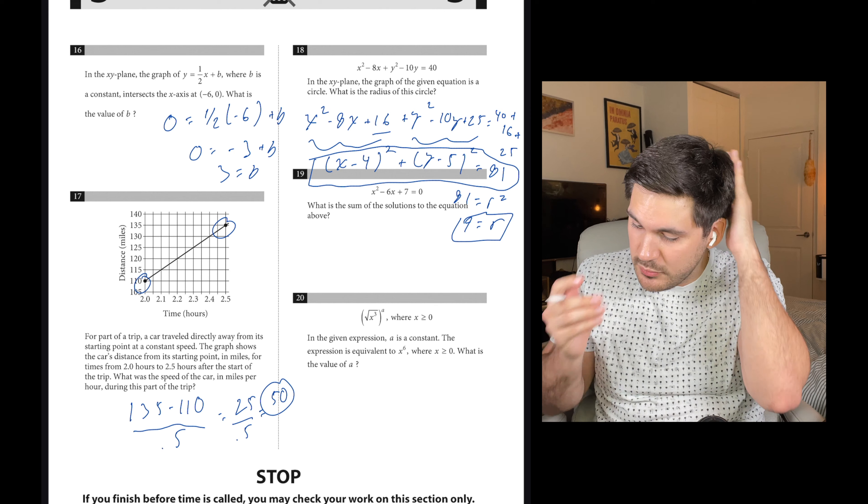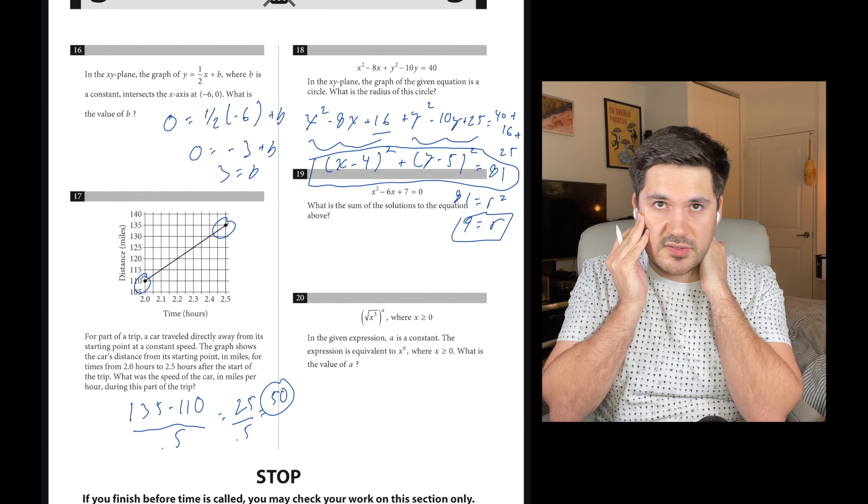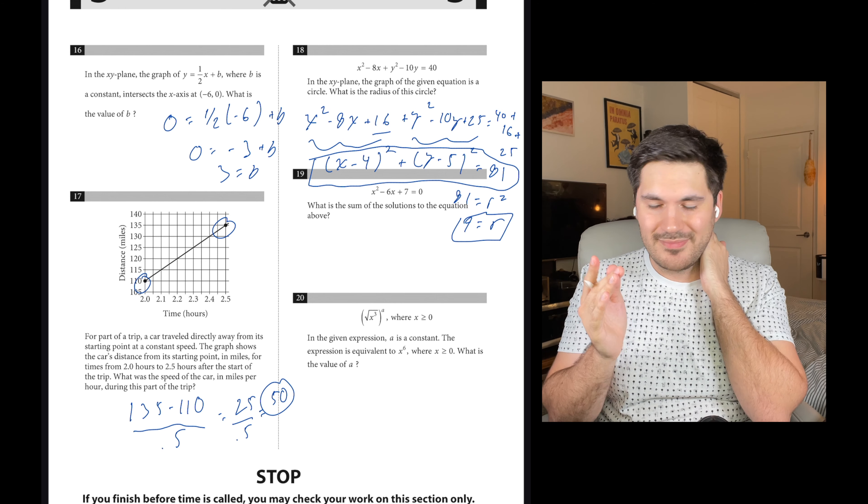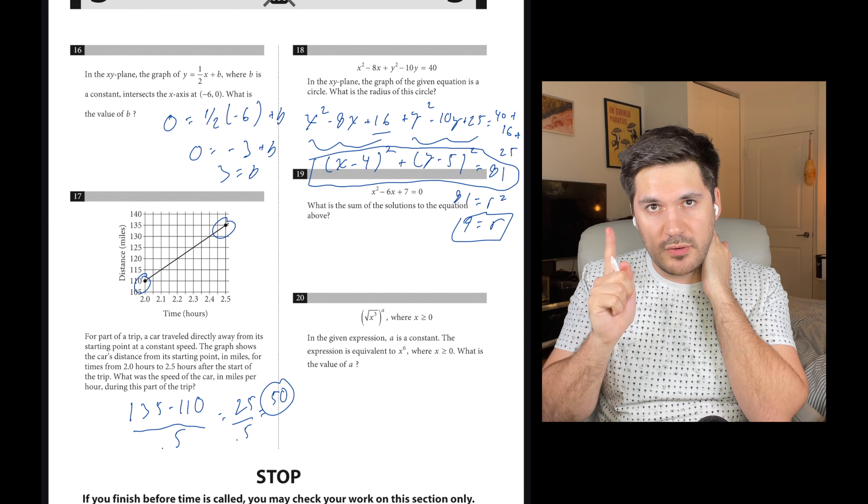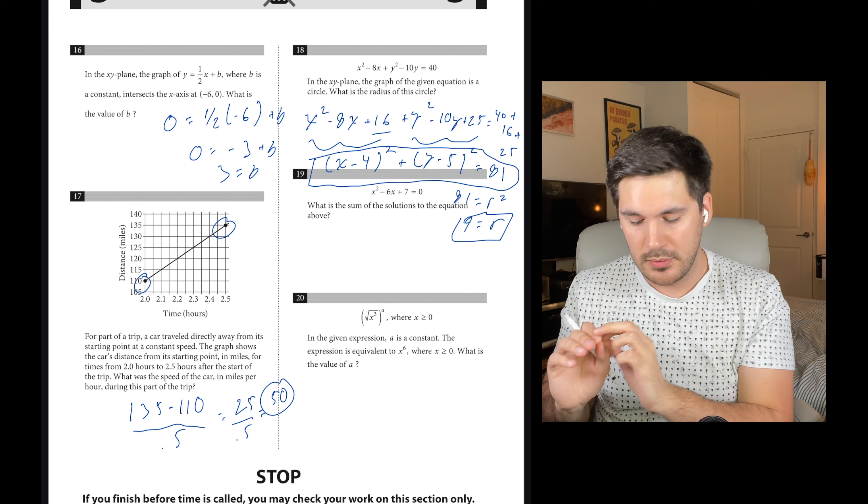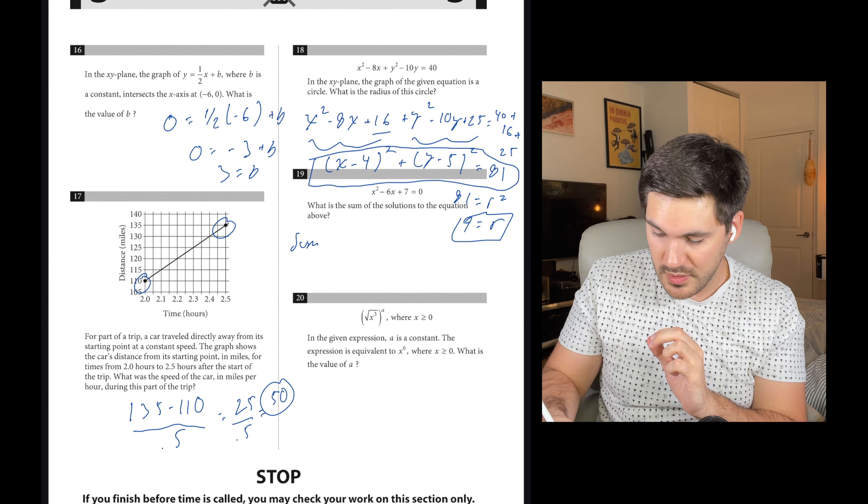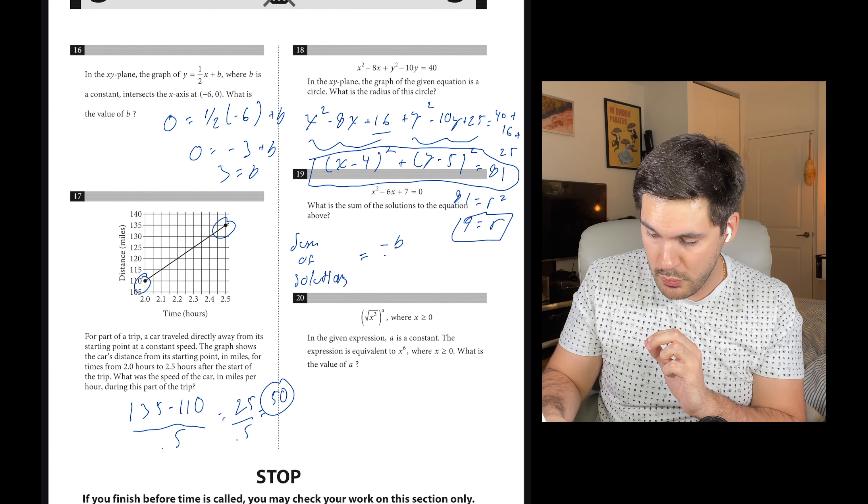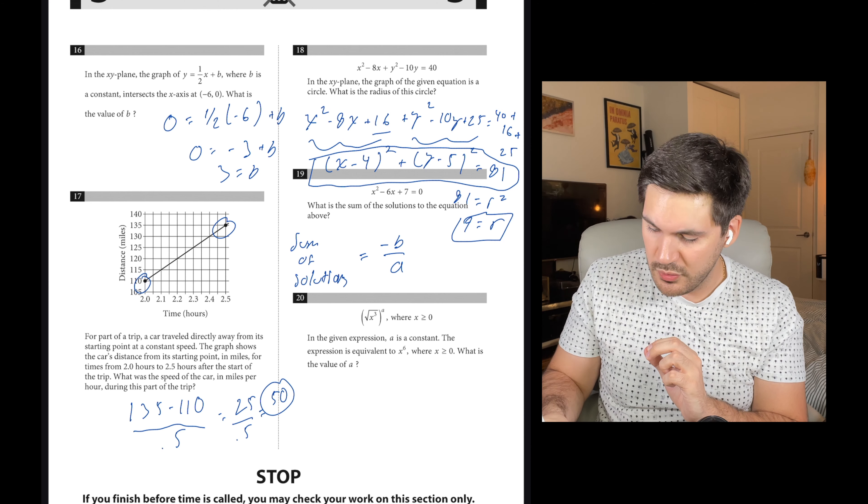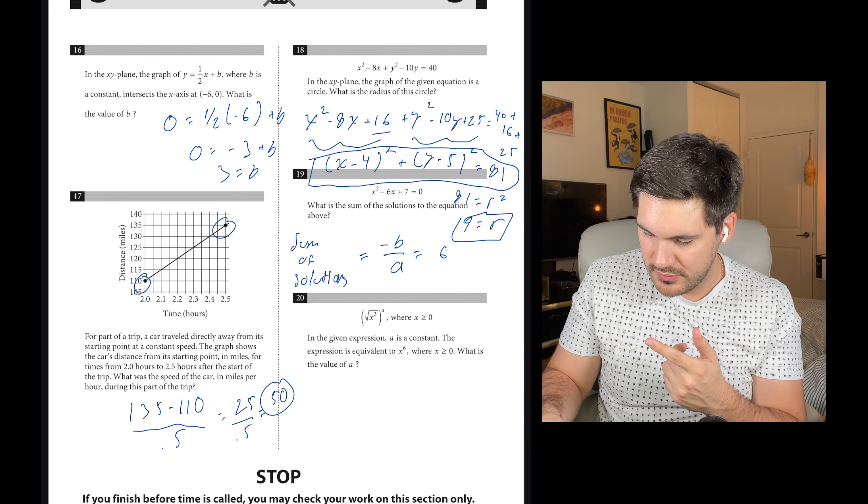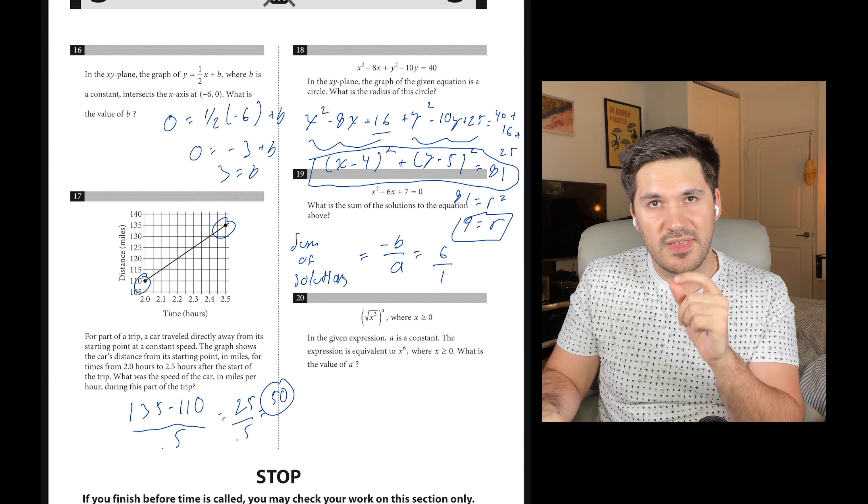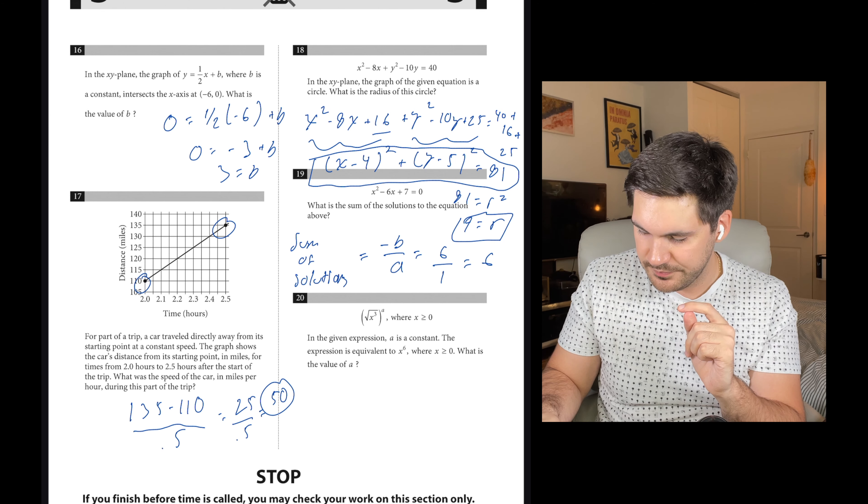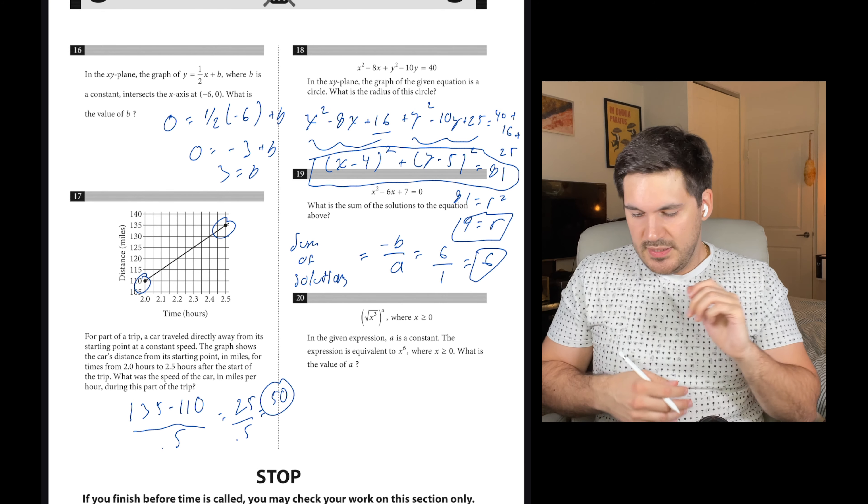Number 19, x squared minus 6x plus 7 equals 0. What is the sum of the solutions to the equation above? You could just factor this and get the solutions and add them up. But there is a shortcut. The shortcut to get the sum of the solutions of a quadratic is sum of solutions equals negative b over a, which is going to be negative negative 6, so 6 over 1. This equals 6.